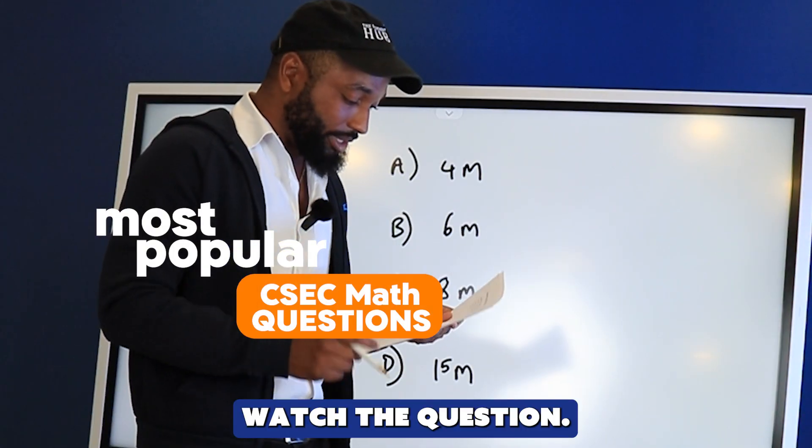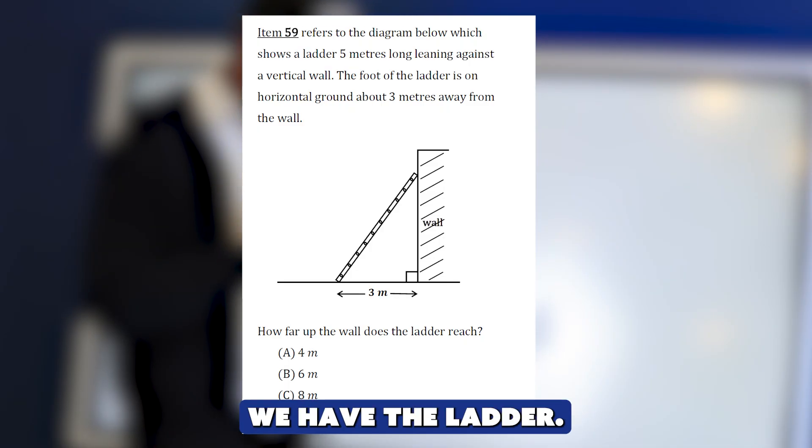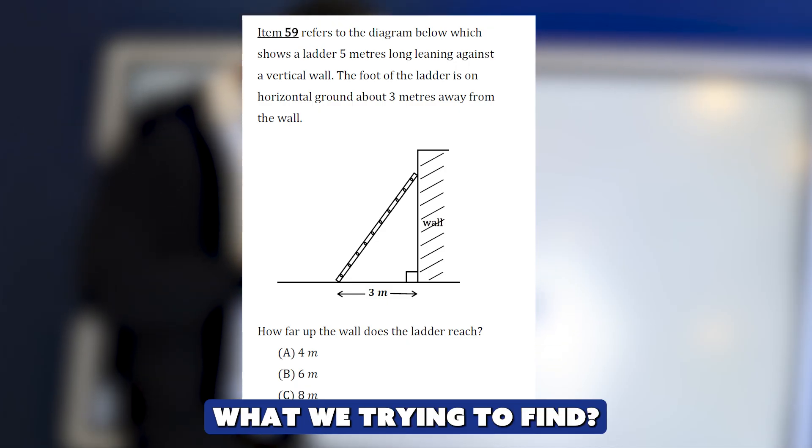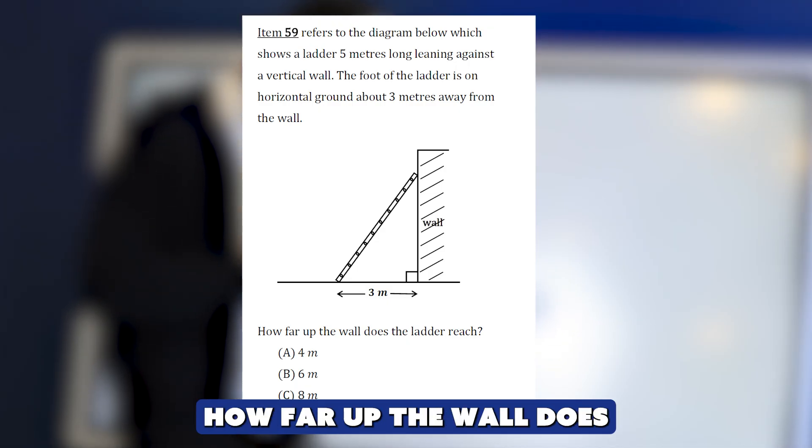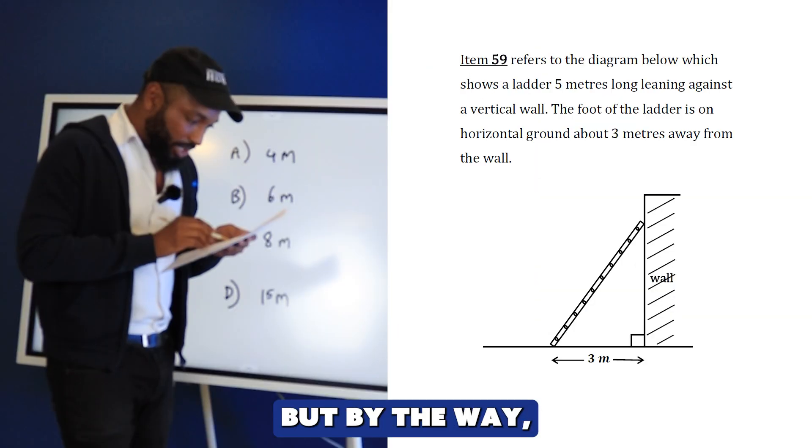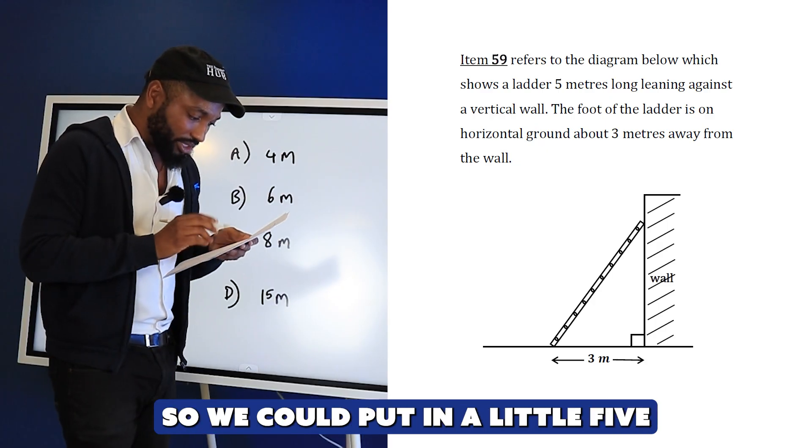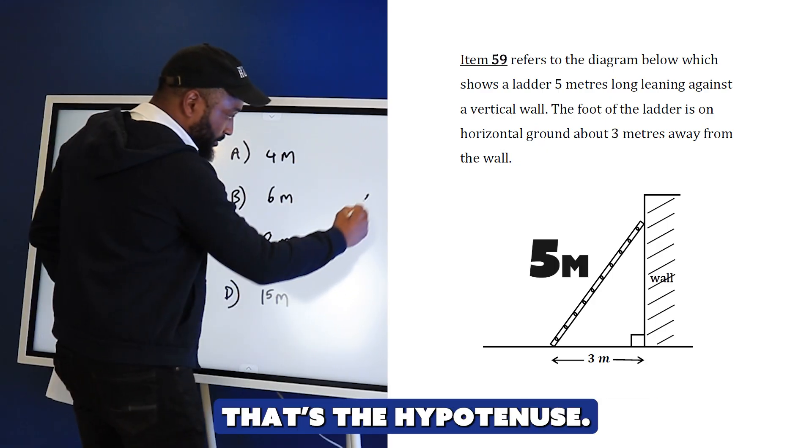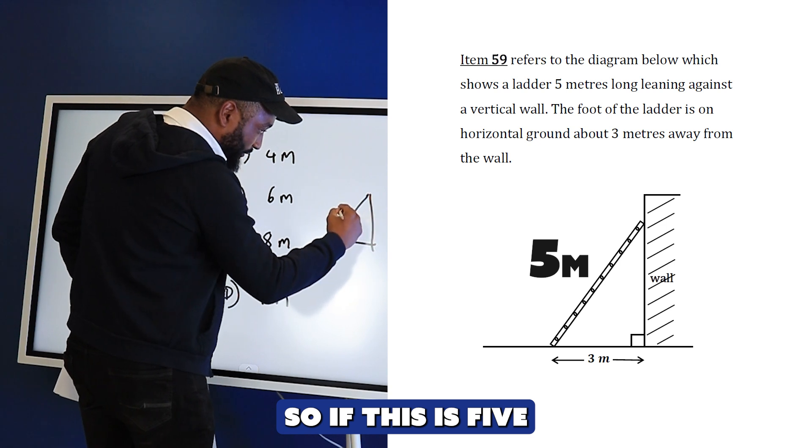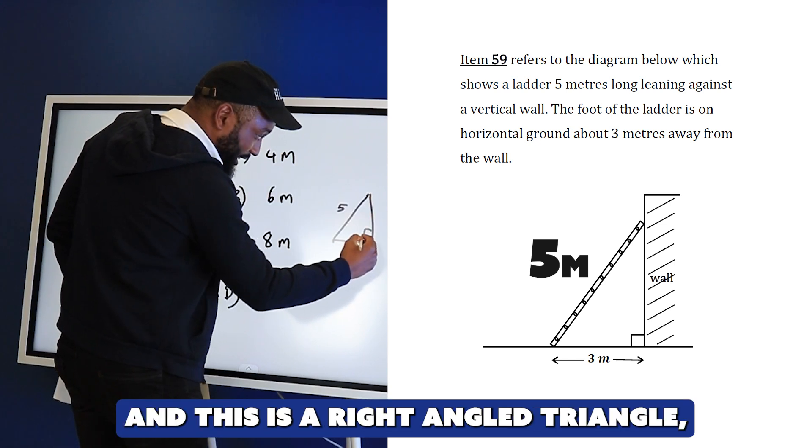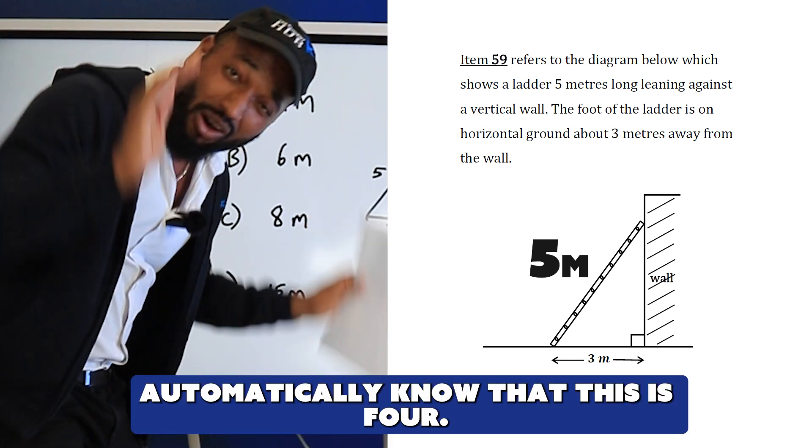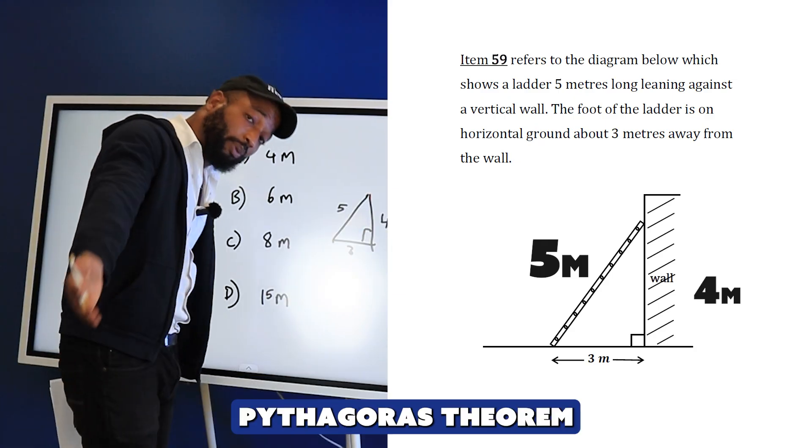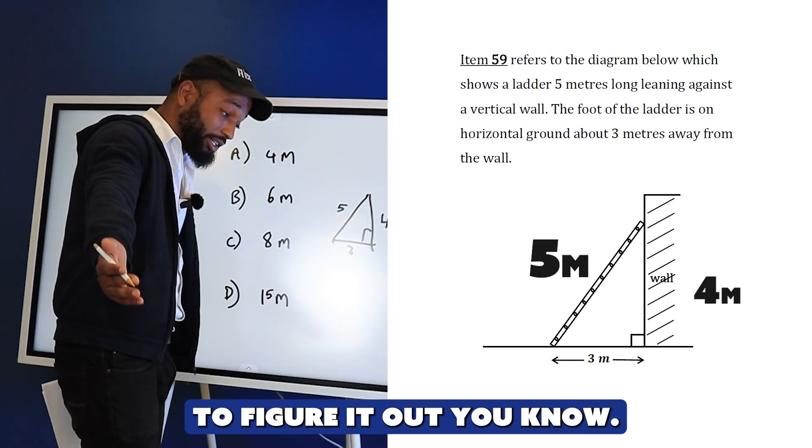We have the wall, we have the ladder, we have this 3 meters. What we're trying to find: how far up the wall does the ladder reach? The ladder is 5 meters - that's the hypotenuse. So if this is 5 and this is 3 and this is a right angle triangle, you're just supposed to automatically know that this is 4.